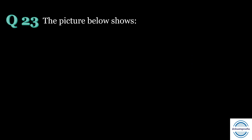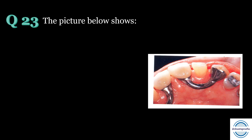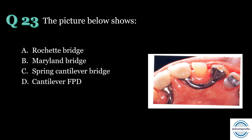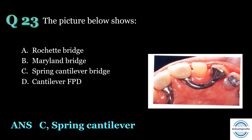Question number twenty-three: The picture shows — A) Rashid Bridge, B) Maryland Bridge, C) spring cantilever bridge, or D) cantilever FPD? The answer is C — spring cantilever bridge. As seen in the picture, the central incisor is the pontic which is retained by the canine, and loop connectors are used.